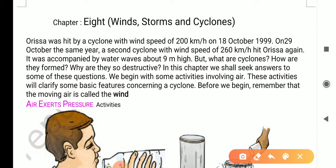Odisha was hit by a cyclone with wind speed of 200 km per hour on October 18, 1999. On October 29, in the same year, a second cyclone with wind speed of 260 km per hour hit Odisha again.